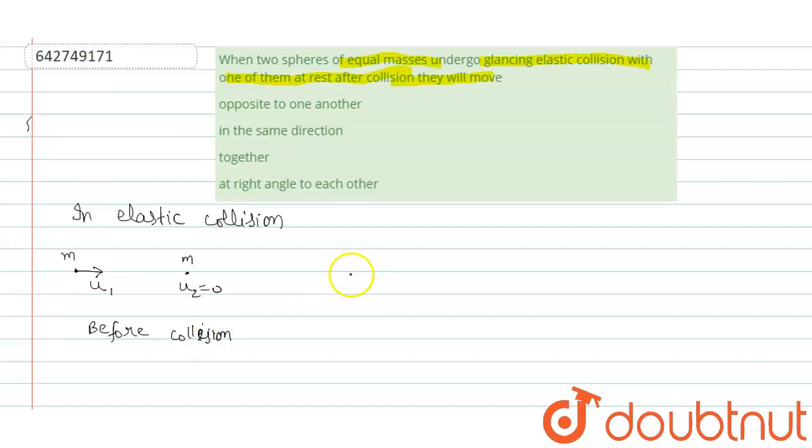And after collision, they will move at right angles to each other. This is angle 90 degrees. This is mass m and this is mass m. After collision, we can say that they will move at right angles to each other.